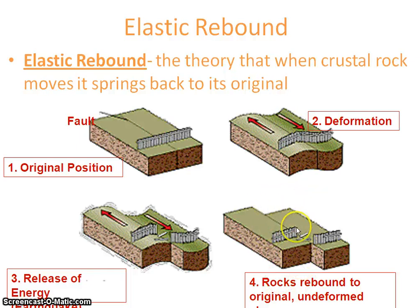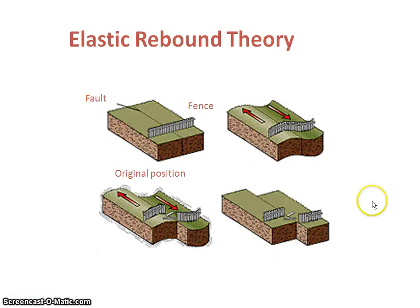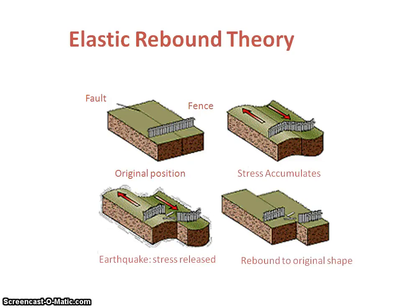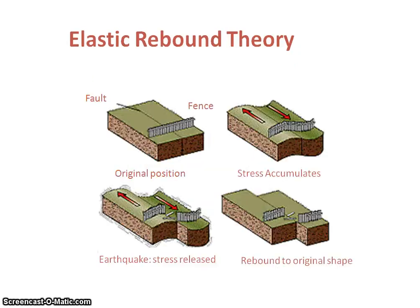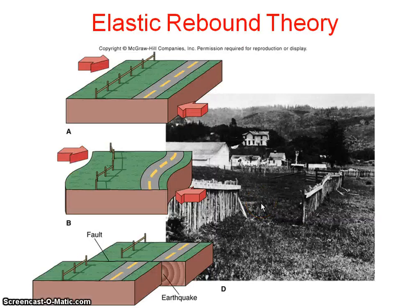This is called elastic rebound theory — like an elastic rubber band, it rebounds back to its original shape. Stress on the fault slowly accumulates. During an earthquake, stress on the fault is released, and after the earthquake, stress begins to re-accumulate. First the stress is released and the earthquake occurs, then it rebounds to its original shape.